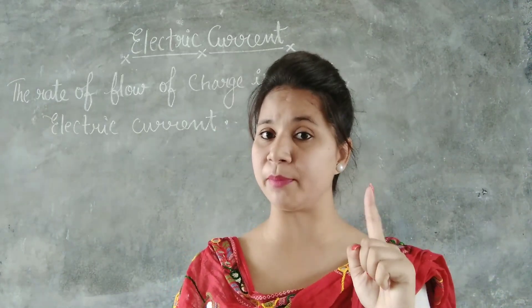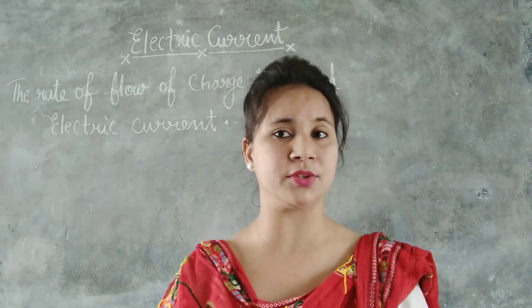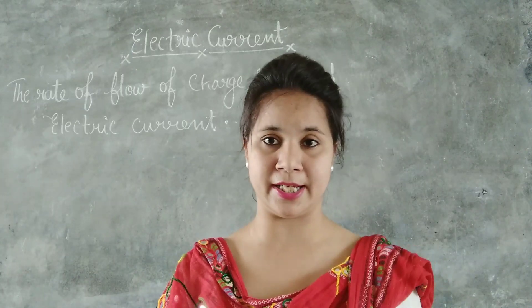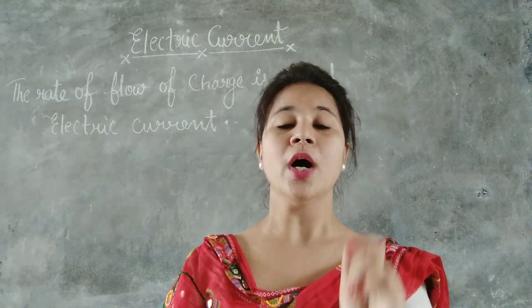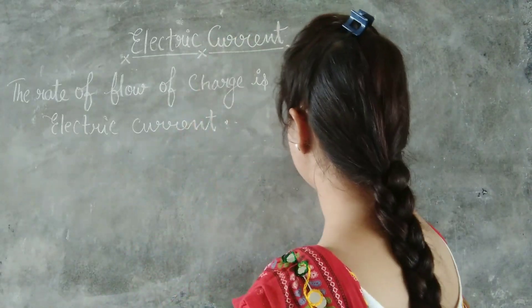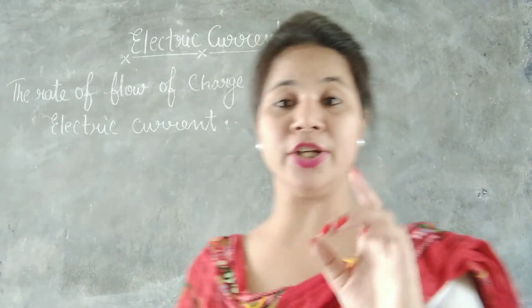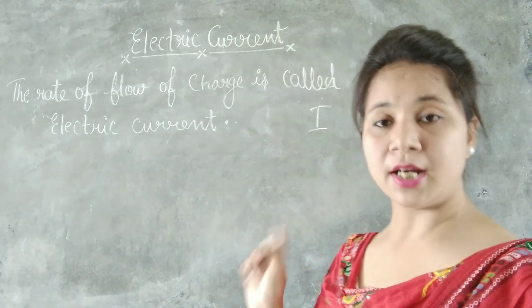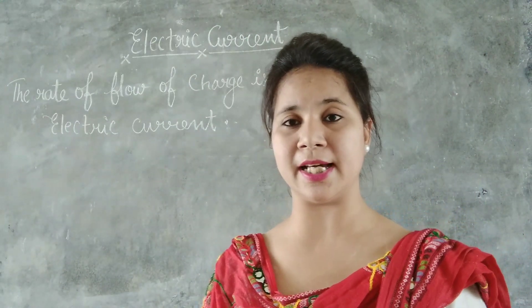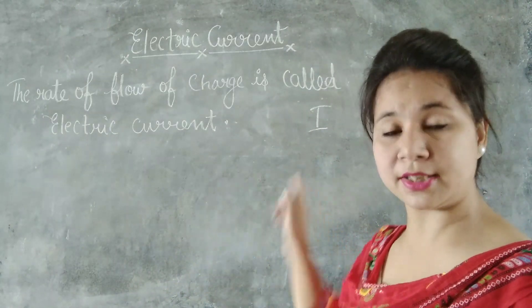That is, in 1 second, how many electrons pass through any area of cross section — this is called electric current. Electric current is denoted by capital I. Sometimes small i is also used, but generally the symbol of electric current is capital I.